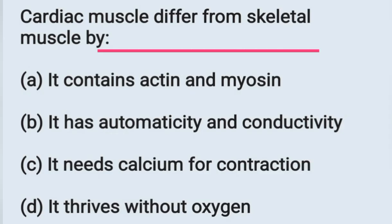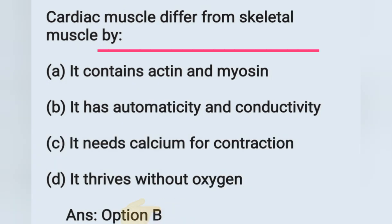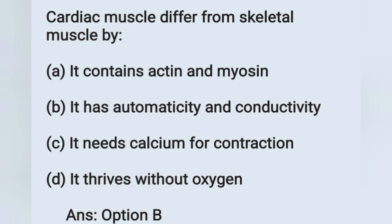Next question: cardiac muscle differs from skeletal muscle by which property? Options: (a) it contains actin and myosin, (b) it has automaticity and conductivity, (c) it needs calcium for contraction, (d) it thrives without oxygen. The correct answer is option B — it has automaticity and conductivity. The remaining options are features of skeletal muscle.